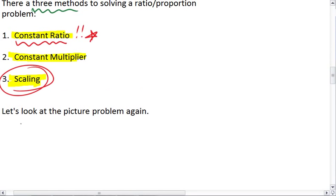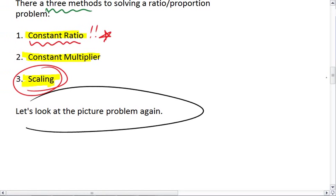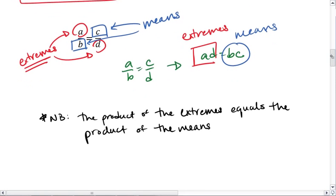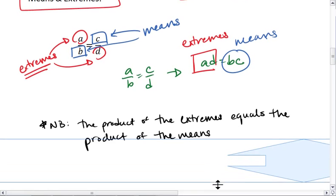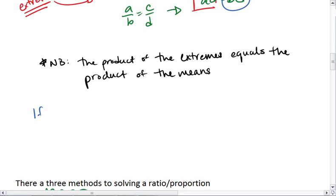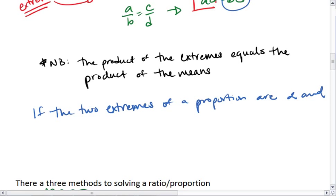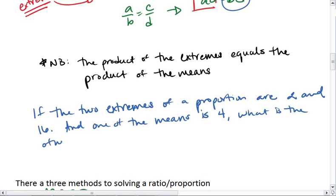We've talked about the three methods. Before moving on, let's look at a couple of examples with the means and extremes. If the two extremes of a proportion are 2 and 16, and one of the means is 4, what is the other mean?